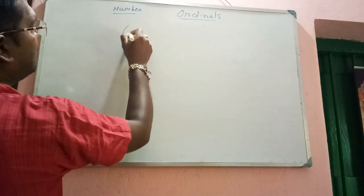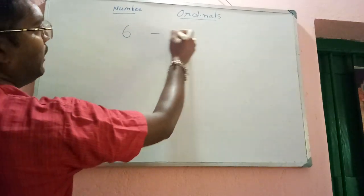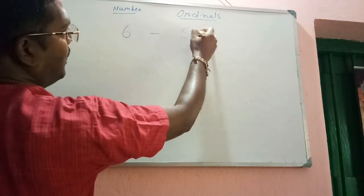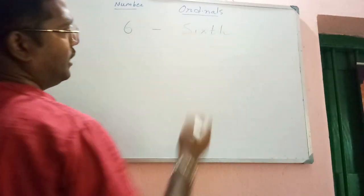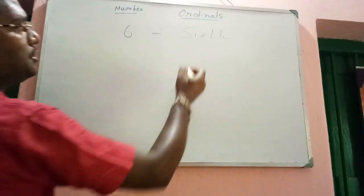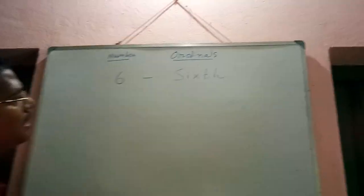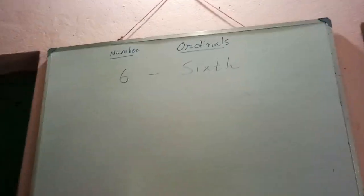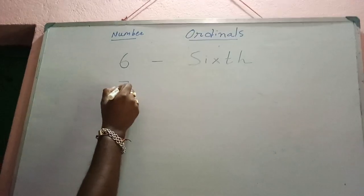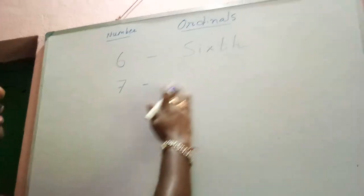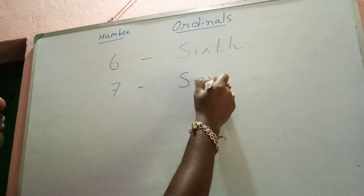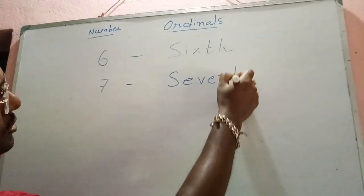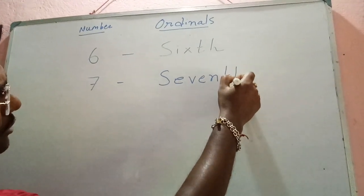Number is six and ordinal will be sixth. Next, number is seven and ordinal will be seventh — S-E-V-E-N-T-H. Seventh.